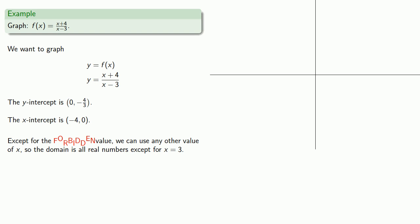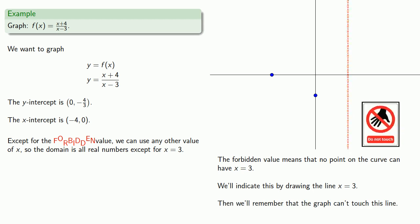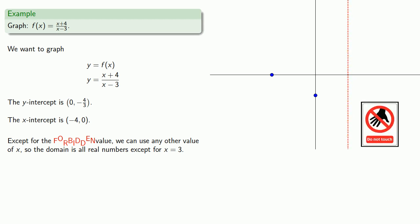So let's start to sketch our graph. We'll plot the x and y intercepts. The forbidden value means that no point on the graph can have x equals 3. We'll indicate this by drawing the line x equals 3, and well, if this were a real line, we'd run an electric current through it, but we'll just have to remember that the graph can't touch this line.